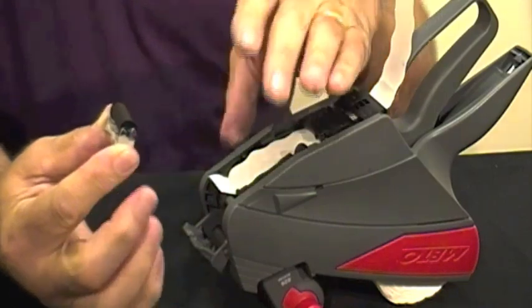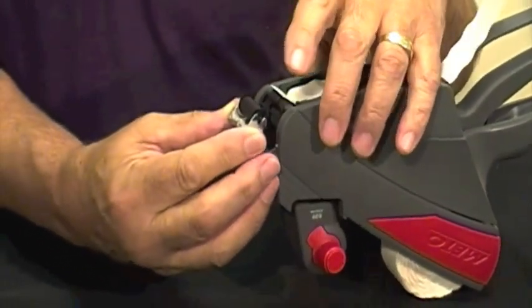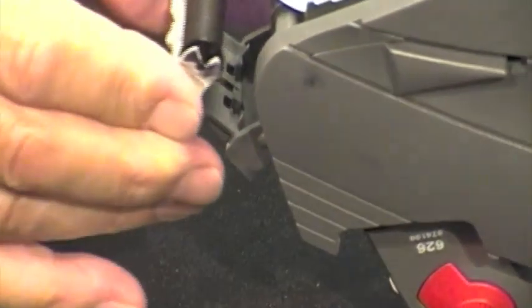Once it's back in place, you can replace the cartridge in the tool, and you're ready to print labels again.